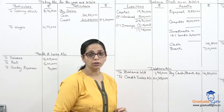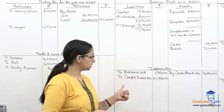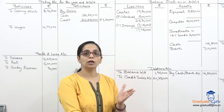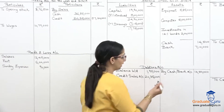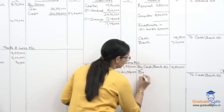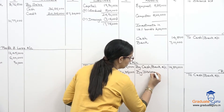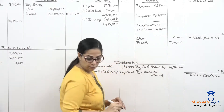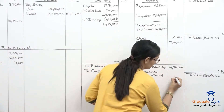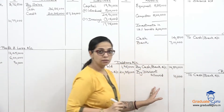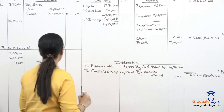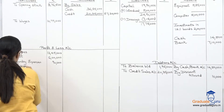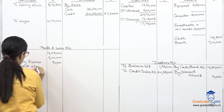Discount allowed: discount is an expense, so the entry is discount account debit to debtors account. In debtors, credit side: 'by discount allowed' ten thousand. Second effect in P&L on the debit side: 'to discount allowed' ten thousand.